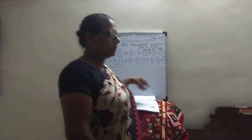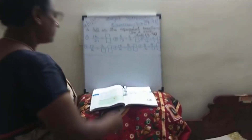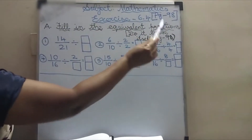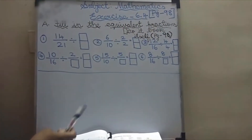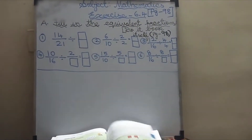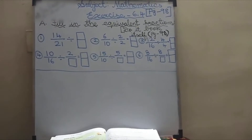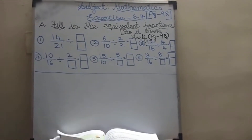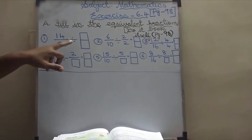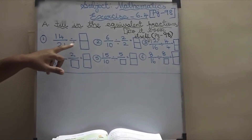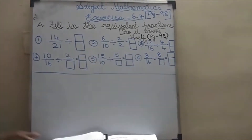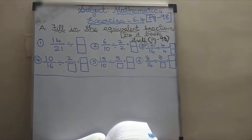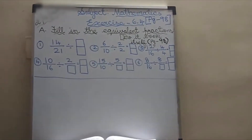Exercise 6.4. First one — fill in the equivalent fractions. Children, what you have to do? You have to divide this one so that it will be very easy for you. We learned division. We learned the multiplication last class.